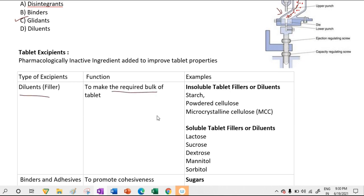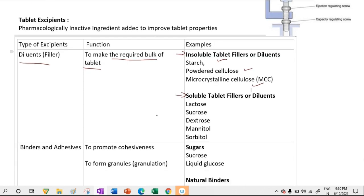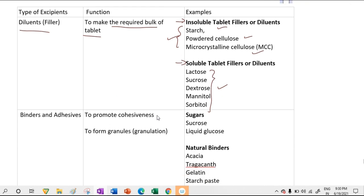Diluents or fillers are used to make the required bulk of the tablet. Diluents are classified as insoluble or soluble. Insoluble examples include starch, cellulose, and microcrystalline cellulose. Soluble examples are lactose, sucrose, dextrose, mannitol, and sorbitol.